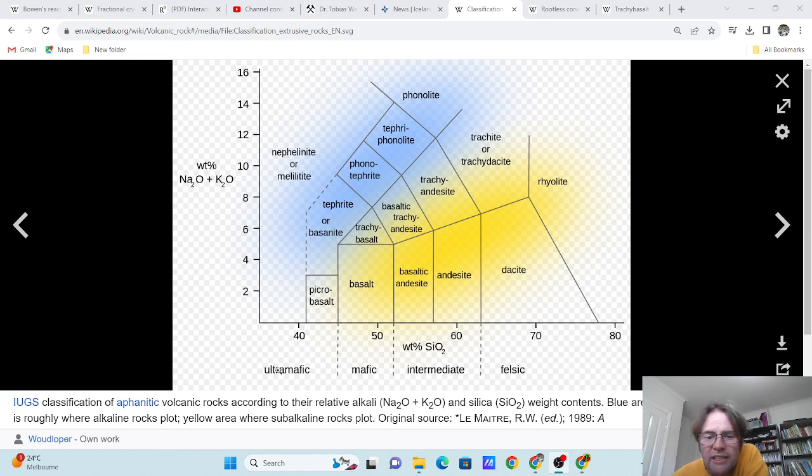Now if you look at the ultramafic, mafic, and felsic rocks, the subalkali seems to peter out as the silica content gets pretty low.